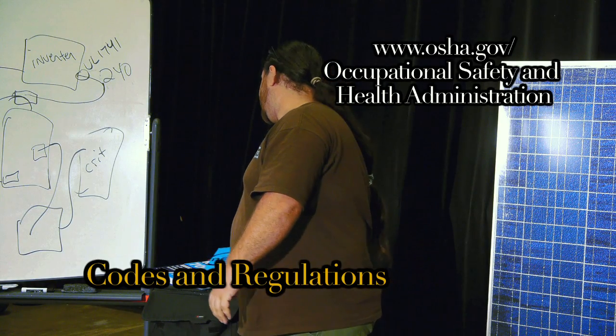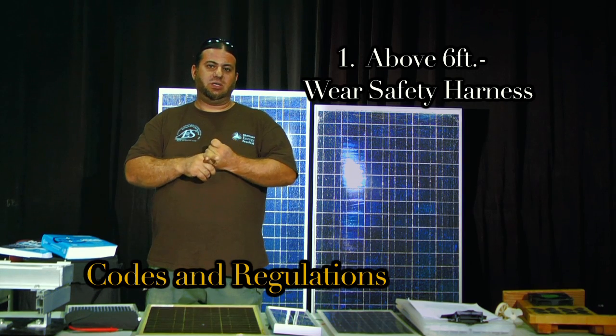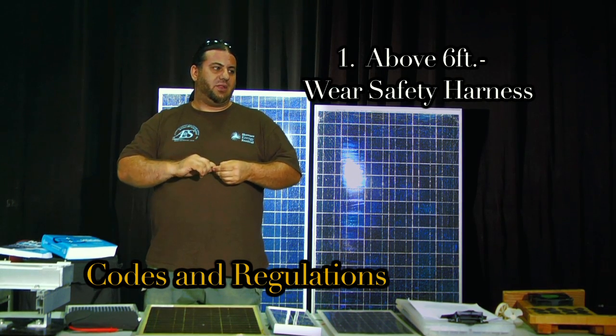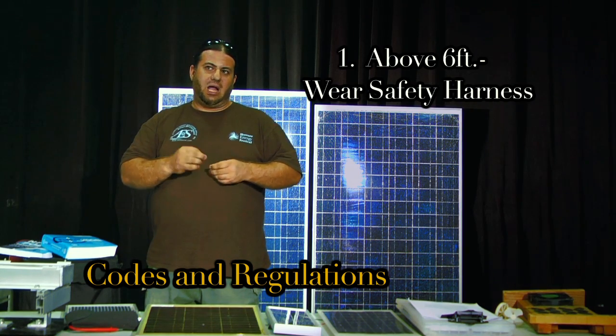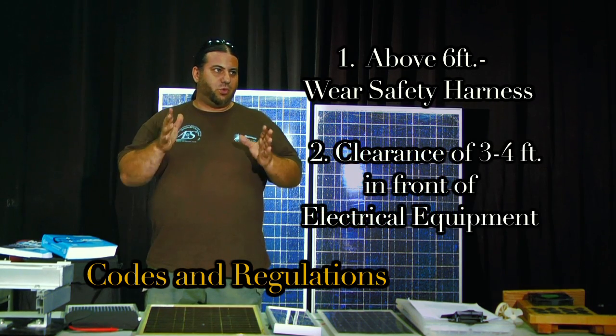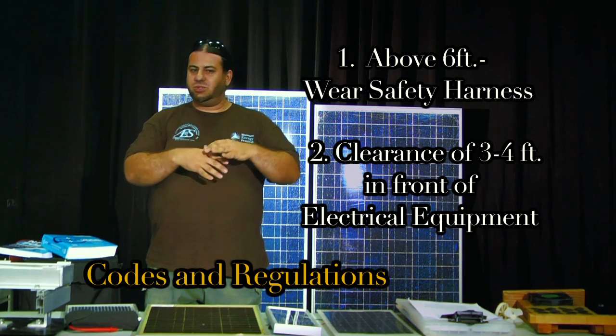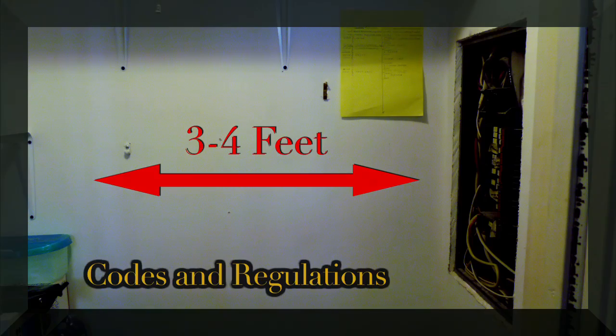You need to know the OSHA regulations. If you're getting up on a roof and it's over six feet, you have to wear safety harnesses. That's the simplest one. The other one is you always have to have three to four feet of working space in front of any electrical equipment. I always just automatically do four feet. Most of this pertains to just regular electric equipment.